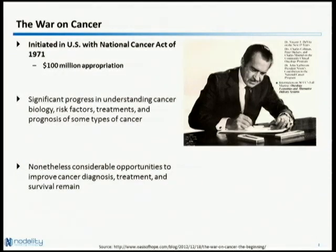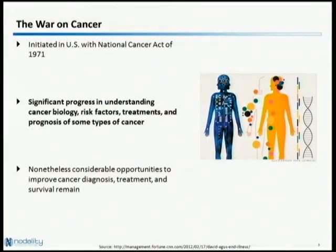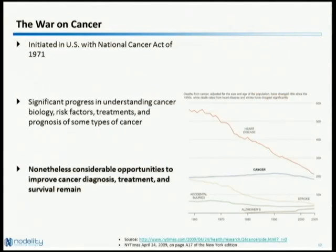The war on cancer has been going on for over 40 years. It was initiated in 1971 by Richard Nixon signing the National Cancer Act, with one of the goals being to more closely connect the National Cancer Institute with the White House and policy. There were very high expectations — some people thought that in 20 years we'd cut the cancer death rate in half. We've made significant progress in understanding cancer biology and improving treatment regimens, but there are still a lot of opportunities.